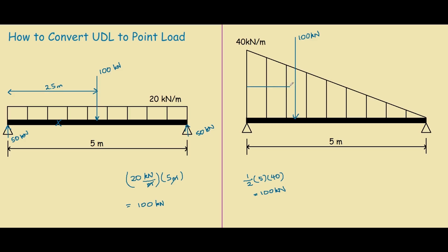100 kN. And the centroid for a triangular UDL is one third from the heavy side. So it will be one third times five, which equals to five on three meters. If you wanted to work out the centroid from the smaller side, it would simply be two thirds times five, which equals to ten on three. This is from the right hand side.